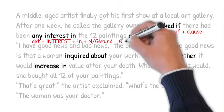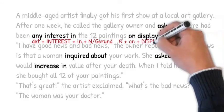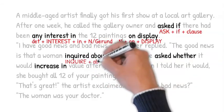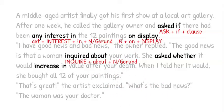We use a noun before on display. There were some nice clothes on display. Inquire about is followed by a noun or gerund. He inquired about the job. He inquired about working there.